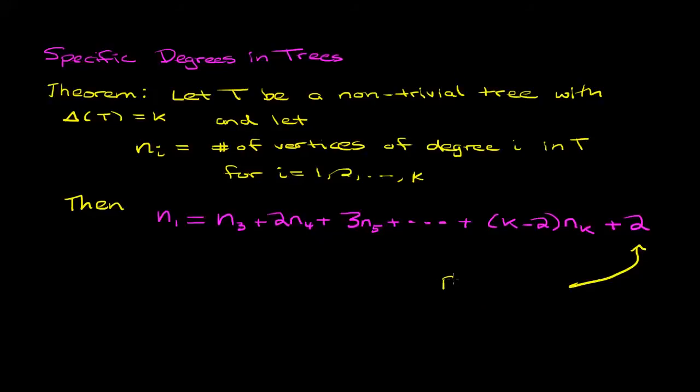If you're wondering about this plus 2, recall that every non-trivial tree has at least two leaves. If you don't remember this, just think about a maximal path in a non-trivial tree and you'll see that each of the end vertices of that path must have degree 1 and is therefore a leaf.